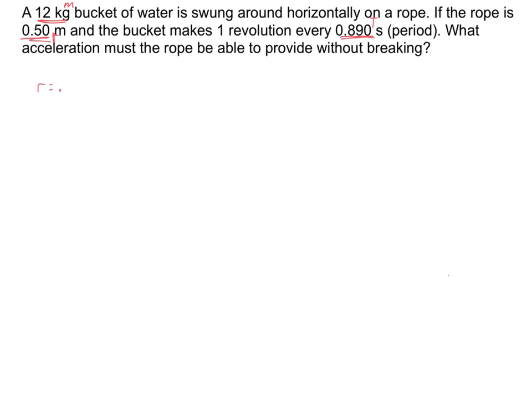And this 0.5 meters, that must be the radius there that is going around because that's how long the rope is. What acceleration must the rope be able to provide to get to spin around without breaking there? So my variable bank: r is 0.50 meters, mass, which I'm actually not going to need here, and period 0.890 seconds. And I'm looking for centripetal acceleration.